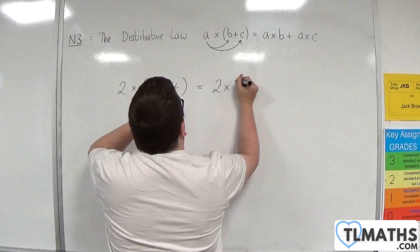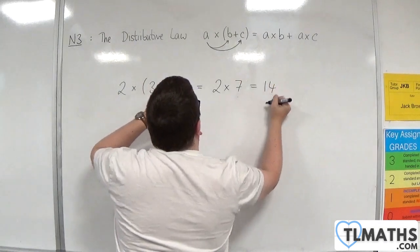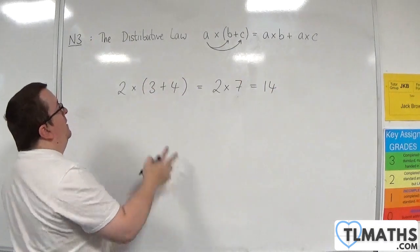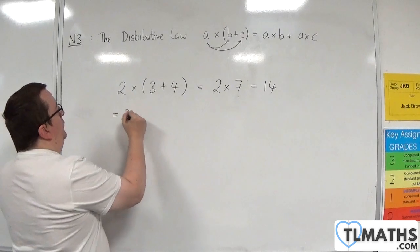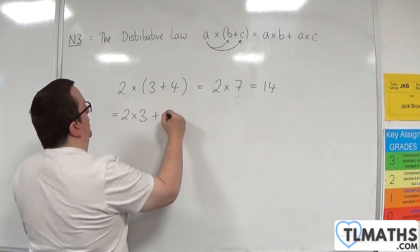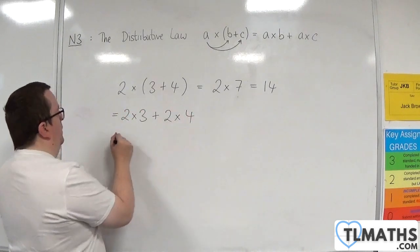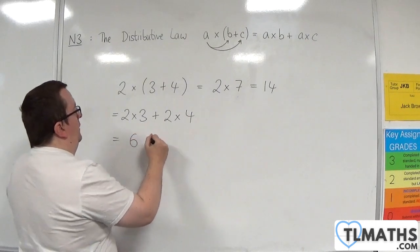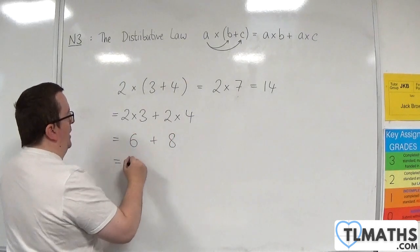And so we have 2 lots of 7, which is 14. But the distributive law is saying that this is the same as 2 times 3 plus 2 times 4. And so that is 6 plus 8, which gets you the 14.